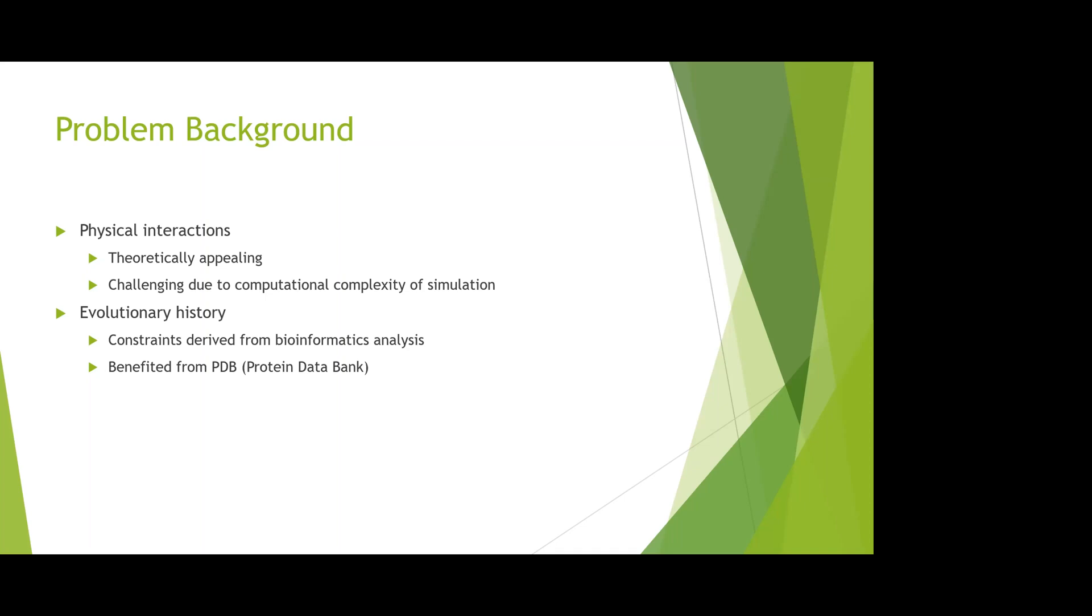The second method is evolutionary history. This one is a more data-based method that uses constraints derived from bioinformatics analysis. It has benefited from PDB, the Protein Data Bank, which is a huge dataset storing protein structures and corresponding amino acid sequences.